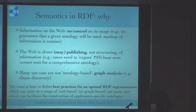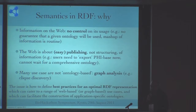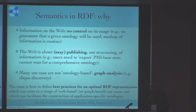Another aspect is that there are many use cases that actually don't work with ontologies, like graph analysis. A typical use of these information resources for users is to look for clusters of interacting genes. This is a use case that can already be addressed at the RDF level. So the issue is then how to define best practices for an optimal RDF representation which can cater to a range of web-based or graph-based use cases, and which can also facilitate the construction of application-specific ontologies.